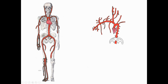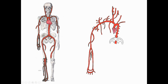Just as the subclavian artery transitioned to become the axillary artery, the axillary artery passes by the teres major muscle and is then renamed the brachial artery. The brachial artery descends down the arm, giving off the deep brachial artery to the posterior compartment. As we enter the forearm, it branches into a radial and ulnar artery continuing to the hand. The ulnar artery gives off a common interosseous trunk branching into anterior and posterior interosseous arteries. The ulnar and radial arteries terminate as the superficial and deep palmar arches, giving rise to digital arteries to the fingers.